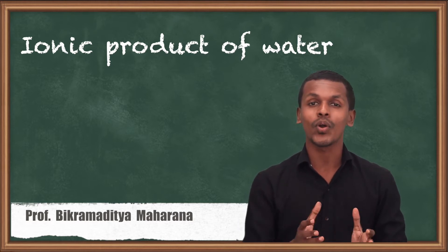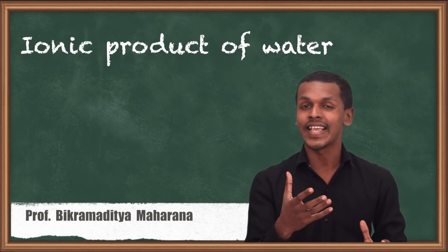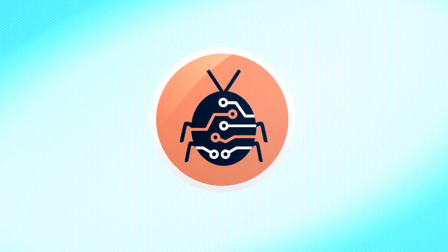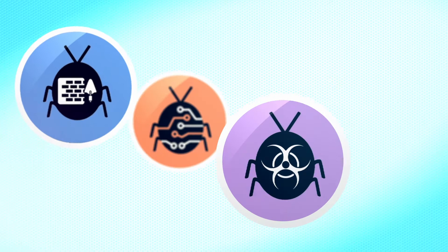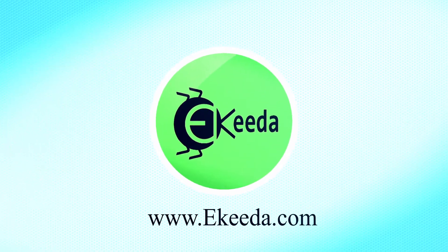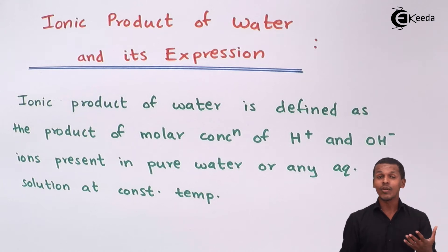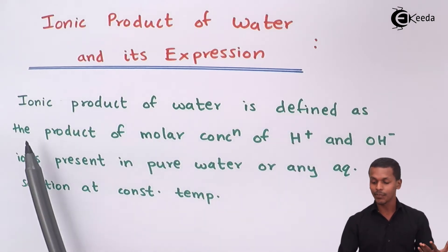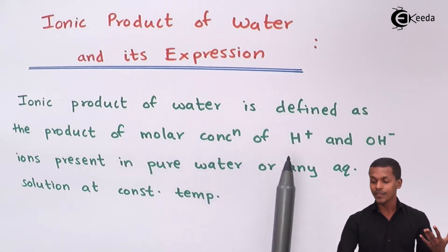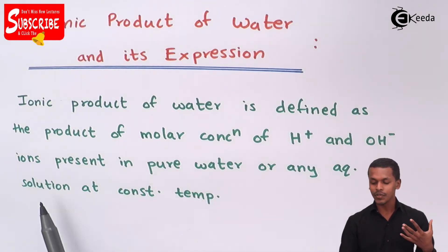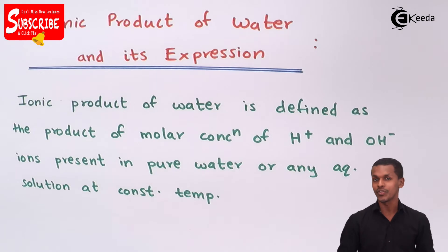Now we are going to study about what is the ionic product of water and its expression. The ionic product of water can be defined as the product of the molar concentration of H⁺ and OH⁻ ions present in pure water or any aqueous solution at constant temperature.